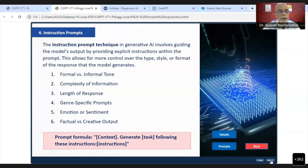Below is written the prompt formula: in brackets there is context, then 'generate a task following this instruction,' then the instruction. This is the prompt formula for an instruction prompt.